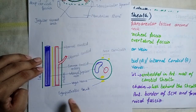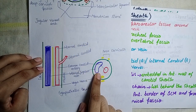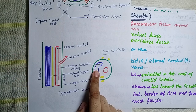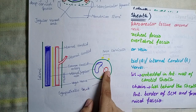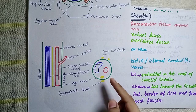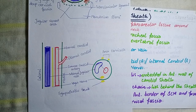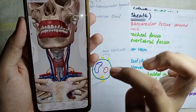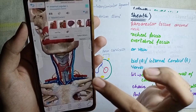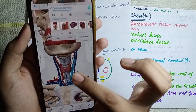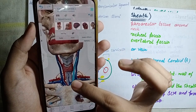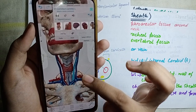When we take the transverse section, we can also see that laterally the internal jugular vein is present, and medially the common carotid artery is present. In the middle, the vagus nerve is present. This is the vagus nerve, this is the internal jugular vein which is laterally present, and this is the common carotid artery which is medially present.